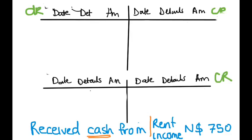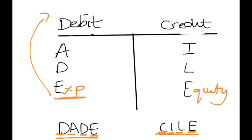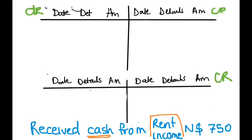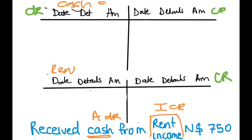The first account is your cash and the second is your rent income. According to what we already memorized, under your debit we have assets, drawings, and expenses, and under your credit we have income, liability, and equity. Cash is an asset, so we are going to debit cash. Rent income is an income, so we have to credit that. We'll record this in your cash account and your rent income account.